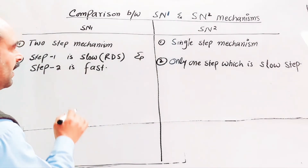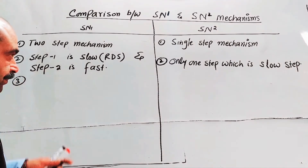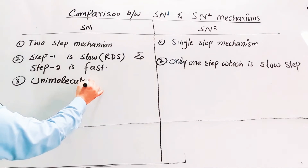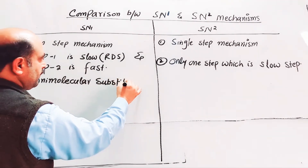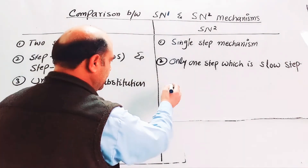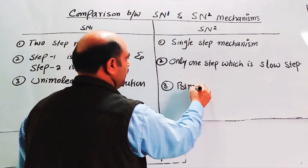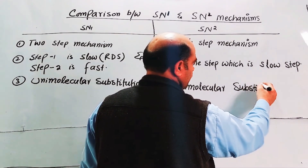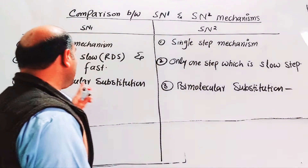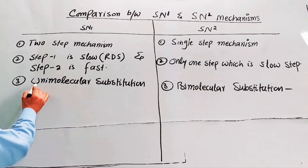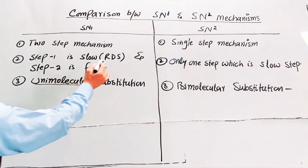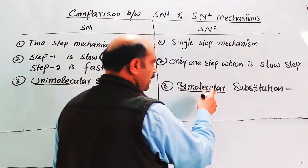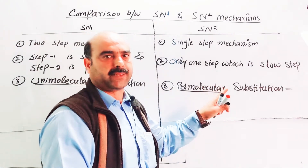Third difference: SN1 mechanism is a unimolecular substitution mechanism, and SN2 is a bimolecular substitution mechanism. SN1 is called unimolecular because only one molecule takes part in the rate-determining step. SN2 is called bimolecular because two chemical species take part in the slow or rate-determining step.